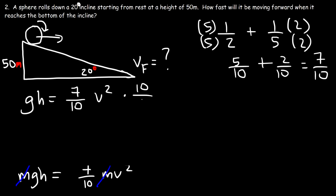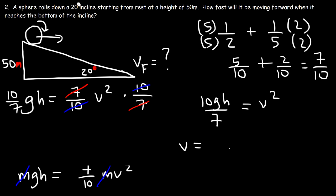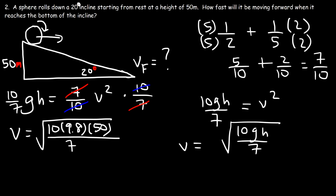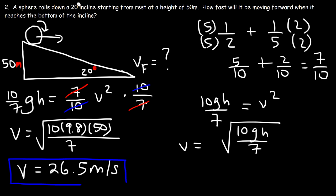Multiplying both sides by ten-sevenths, we get 10gh divided by 7 equals v squared. So v is the square root of 10gh over 7. Plugging in the values: g is 9.8 and height is 50 meters. It's the square root of 10 times 9.8 times 50 divided by 7, which gives a final answer of 26.5 meters per second. That is the linear speed of the sphere as it rolls down the incline and reaches the bottom.